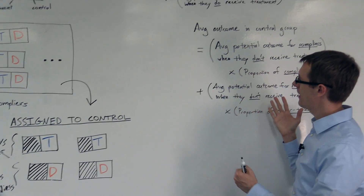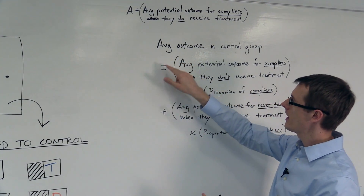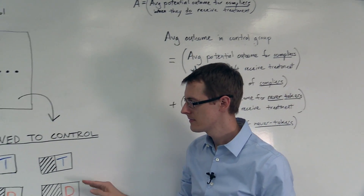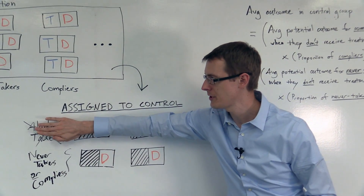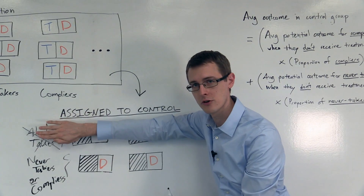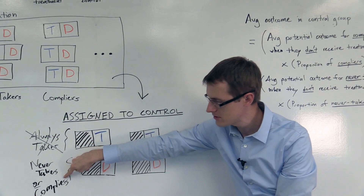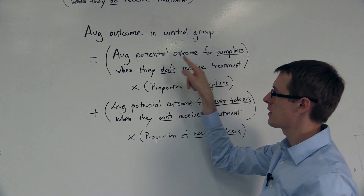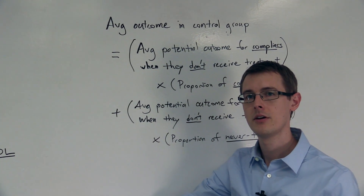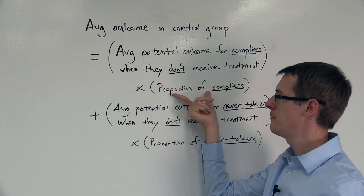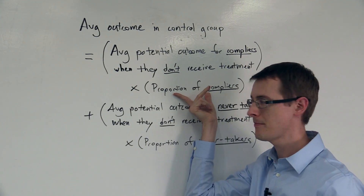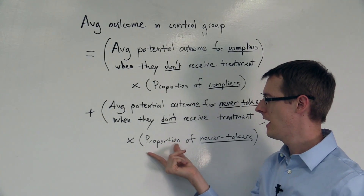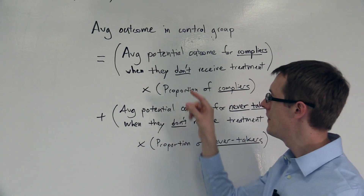I've written out an equation that describes that mixture. On the left-hand side is the average outcome — say, the average cholesterol — in the control group, which is the average of everybody in the control group (remembering there are no always-takers). So the average outcome in the control group equals the average potential outcome for compliers when they don't receive treatment, multiplied by the proportion of compliers in our population, plus the average outcome for never-takers when they don't receive treatment, multiplied by the proportion of never-takers.